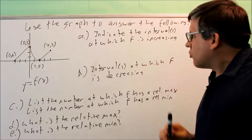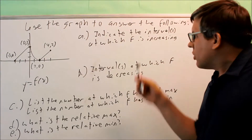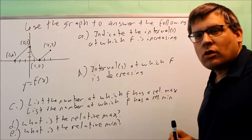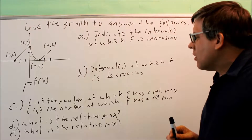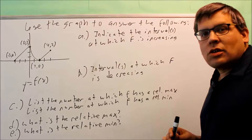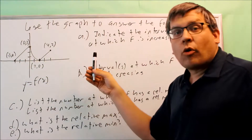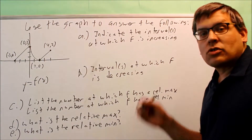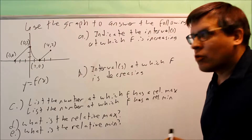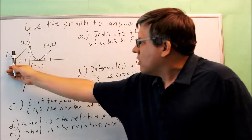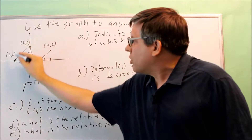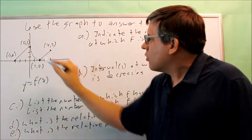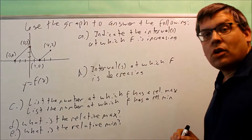The first question says: indicate the interval or intervals at which f is increasing. If the graph is increasing, that means as you move from left to right, you're looking for the part of the graph that is going uphill. There's a piece of the graph that begins to go uphill right here, and there's another one right here where it's going up as you move from left to right.